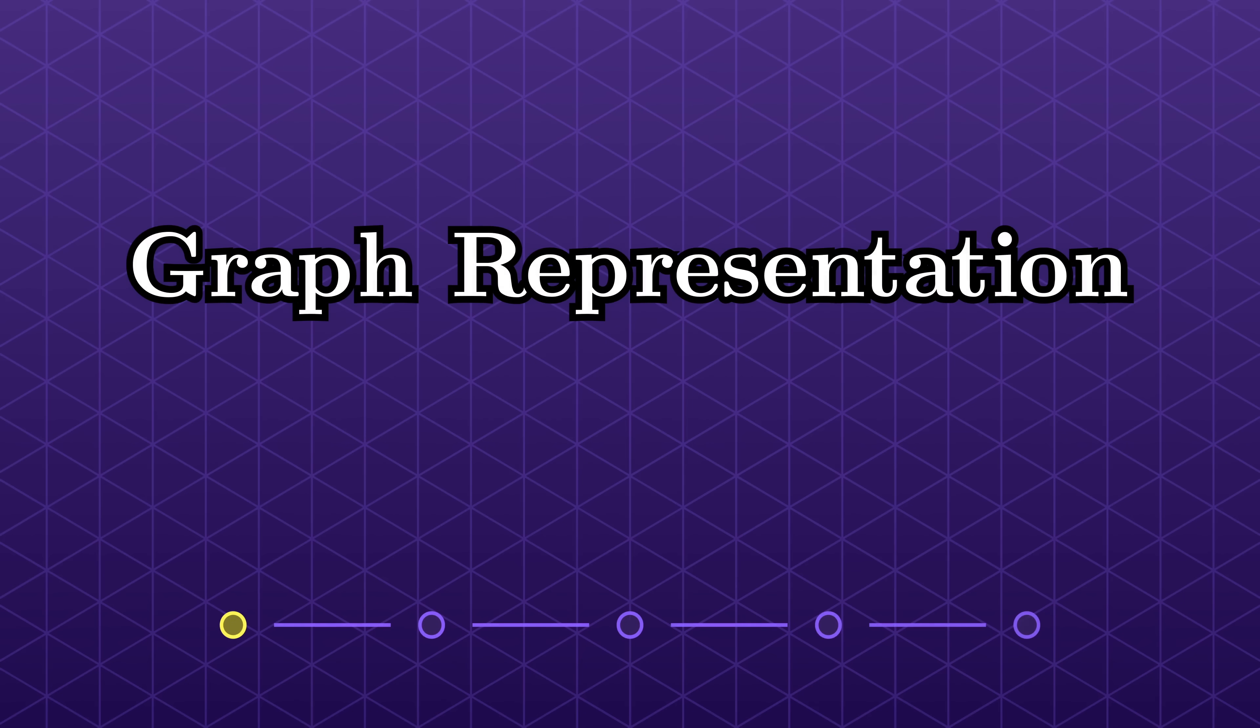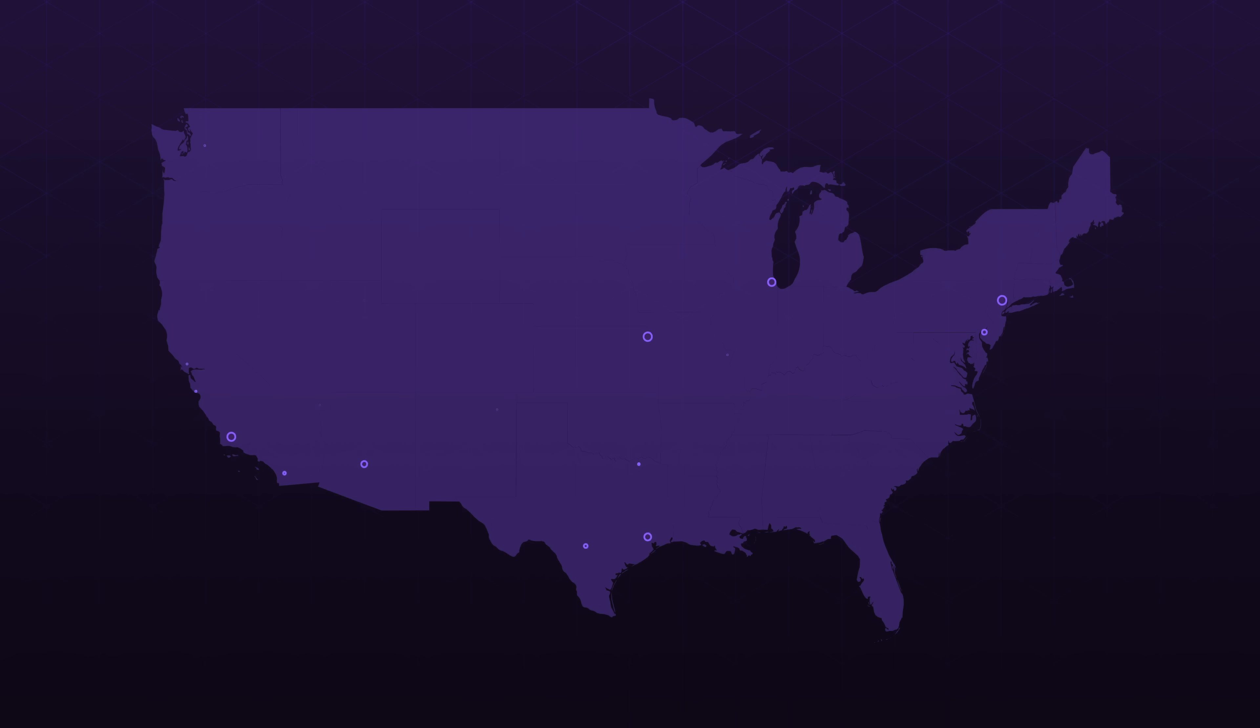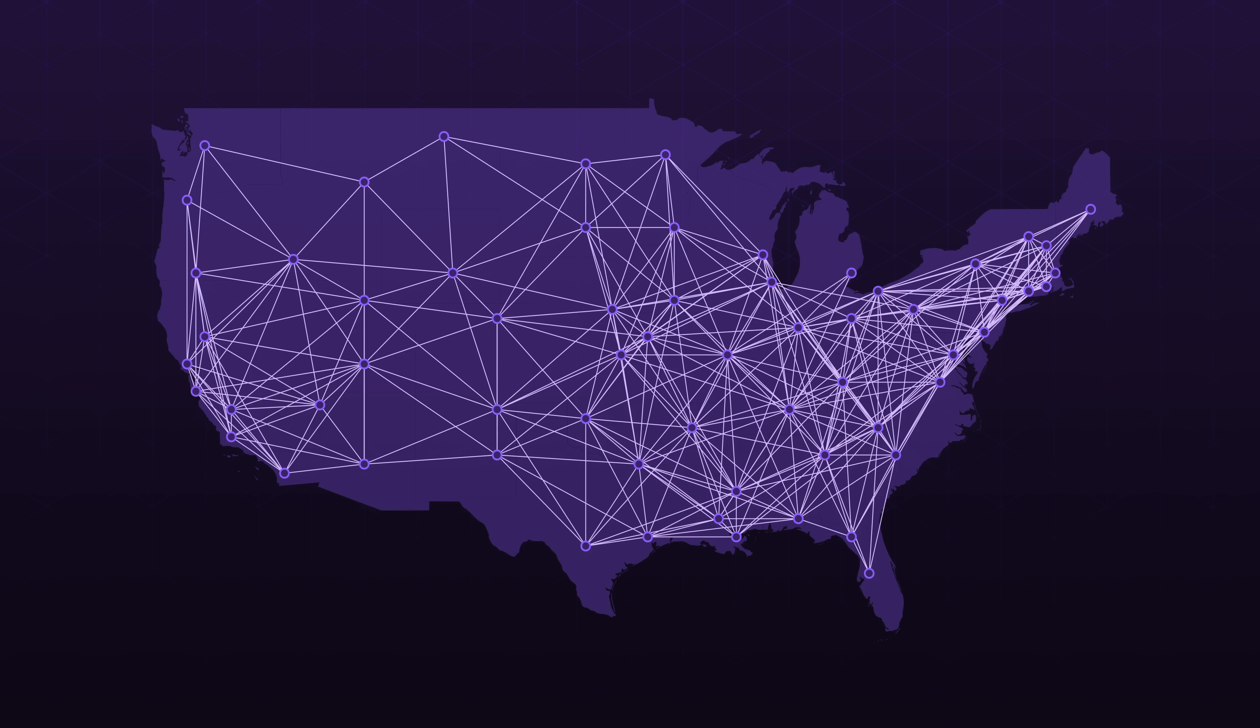Before we get into details, let's start with how we even represent Shortest Path problems on a computer. Imagine you're in the US and you'd like to find the shortest path to travel between two cities. A nice way of modeling this problem is through a graph, where each node is a city and the links or edges between cities can be thought of as imaginary roads.